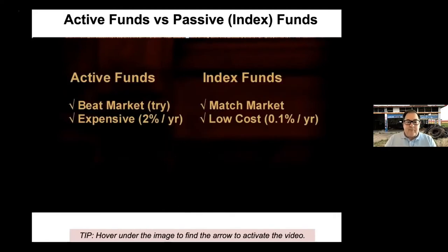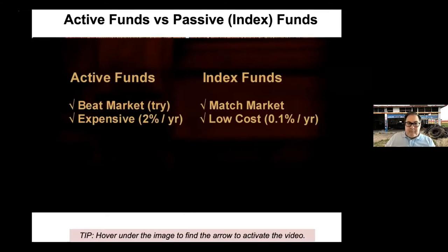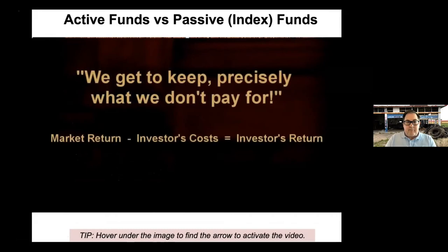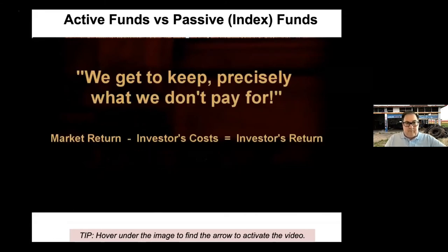Index funds are passively managed and can be very low cost. An index fund simply owns all the stocks in an asset category — the goal is not to beat the market but to match the overall market return as measured by a benchmark index. Active funds require talented staff, excellent research, and frequent trading; all these expenses get paid first and investors get what is left, making it very challenging to beat the market after subtracting these costs.